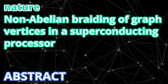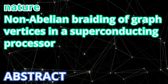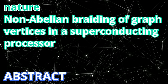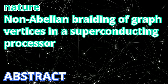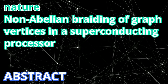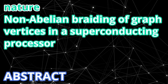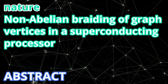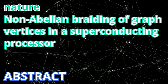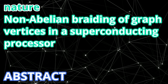Indistinguishability of particles is a fundamental principle of quantum mechanics. For all elementary and quasi-particles observed to date, including fermions, bosons, and abelian anyons, this principle guarantees that the braiding of identical particles leaves the system unchanged.